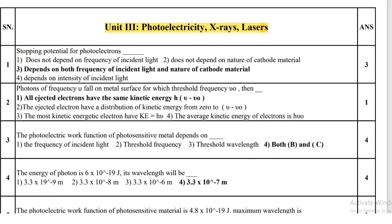First question: stopping potential of photoelectrons depends on both the frequency of incident light and the nature of cathode material. Second question: photons of frequency mu fall on the metal surface.